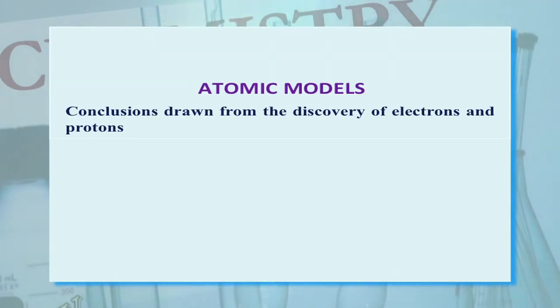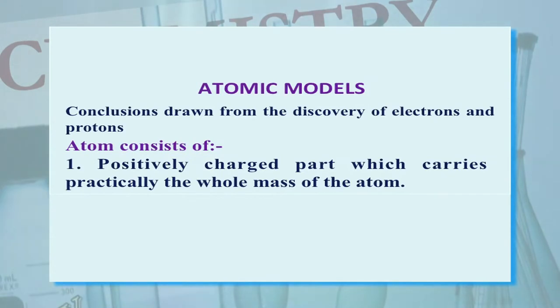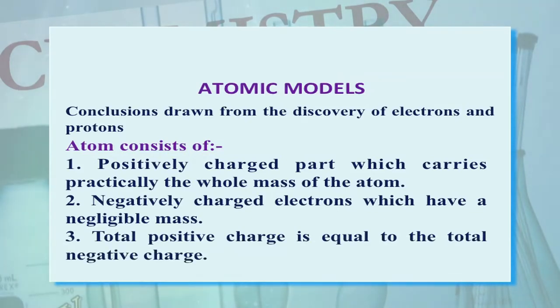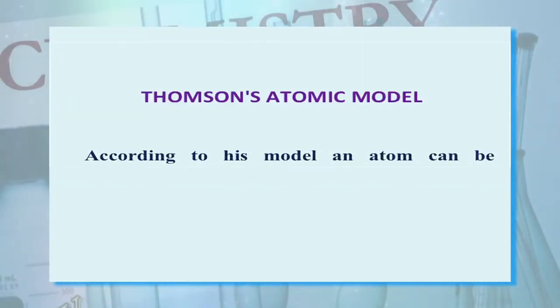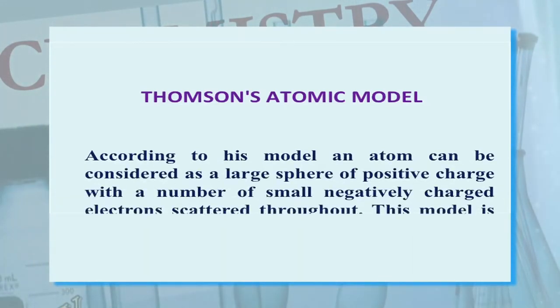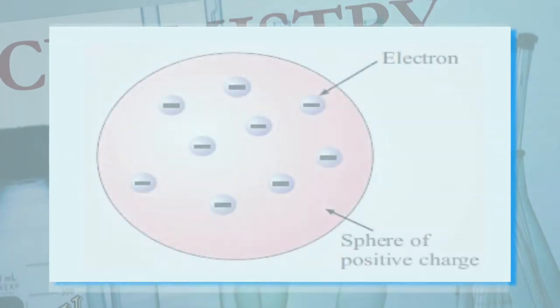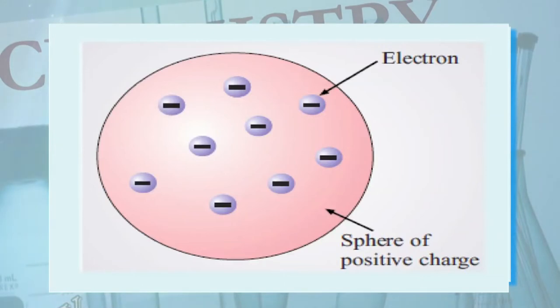Atomic models — conclusions drawn from the discovery of electrons and protons: First, the atom consists of positively charged particles which carry practically the whole mass of the atom. Second, negatively charged electrons which have negligible mass. Third, the total positive charge is equal to the total negative charge. Now, the first model — Thomson's atomic model: According to this model, an atom can be considered as a large sphere of positive charge with a number of small negatively charged electrons scattered throughout. This model is also called the plum pudding model. The sphere indicates the positive charge, and the negative charges are embedded or scattered within this sphere.